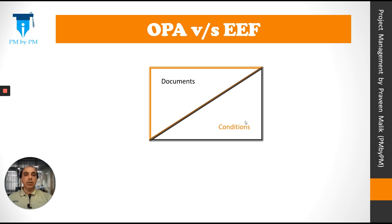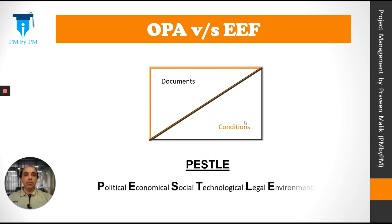So what is the key for distinguishing between OPA and EEF? OPAs are some sort of documents; EEFs are some sort of conditions. The condition may be within the organization or outside the organization. Documents are used by the projects and help the projects; conditions influence the project, sometimes negatively, sometimes positively. An easy way to remember the conditions is the acronym PESEL — political, economical, social, technological, legal, environmental. Just remember this: any document that you use for your project can be considered as OPA, and any condition that influences your project can be considered as EEF.